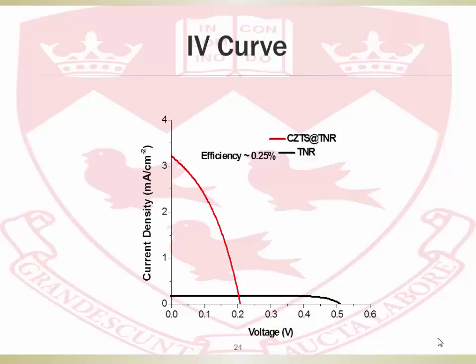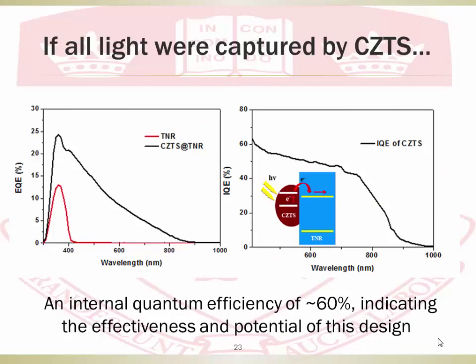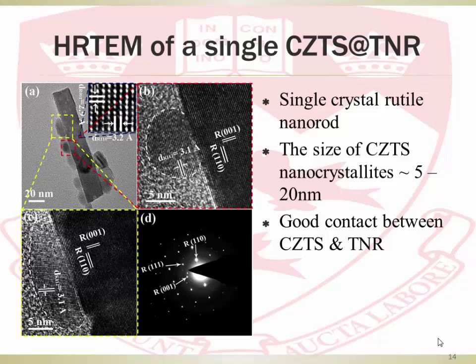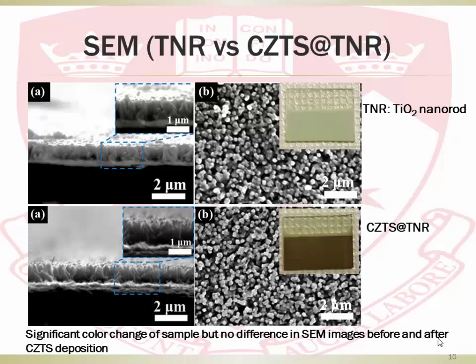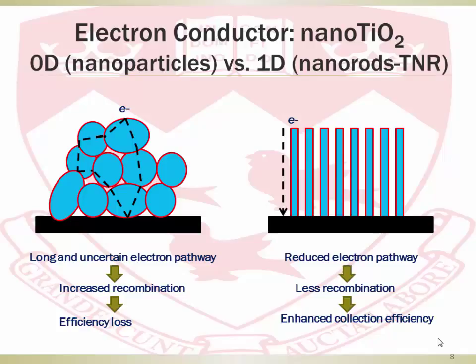Q: What are the major recombination pathways? Can you compare nanoparticles to other configurations? A: For nanoparticles, because we have many particles — each one is a single crystal — when charges need to be collected at the bottom, they have to pass through many grain boundaries. Grain boundaries are the most active sites for recombination, which is why they are problematic. Thank you very much.